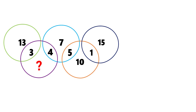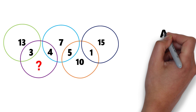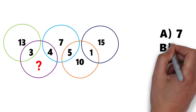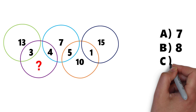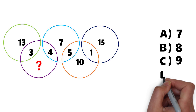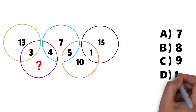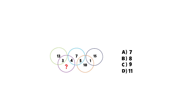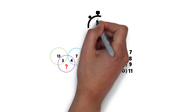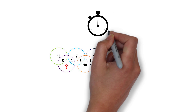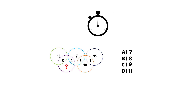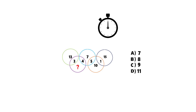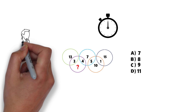You need to calculate the missing number. The choices are: choice A is 7, choice B is 8, choice C is 9, and choice D is 11. Give yourself about 10 to 15 seconds — roughly as much time as you'd get on a typical test — to calculate the answer. Do you see the solution?